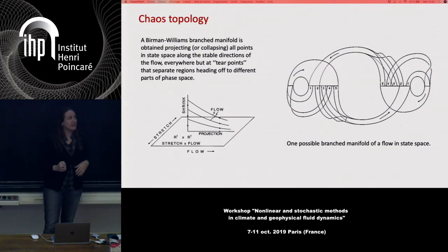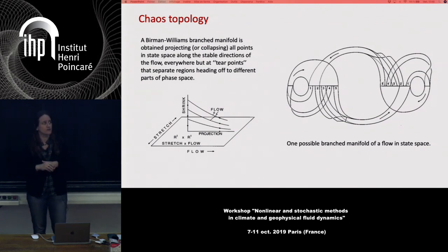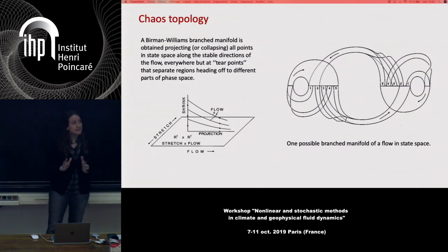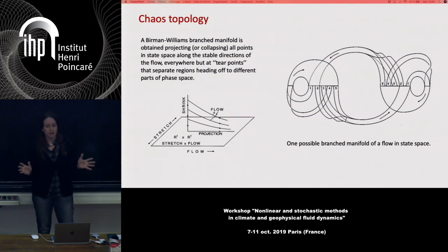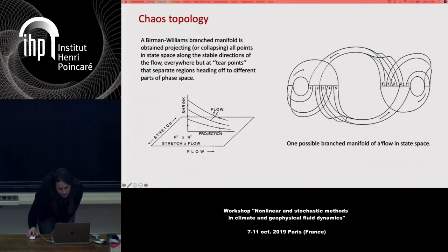What is a Birman-Williams branched manifold? It is a mathematical object obtained by projecting or collapsing all points in state space along the stable directions of the flow, everywhere but at tear points that separate regions heading off to different parts of phase space. Here you see the directions in state space — stretching directions — and along the stable directions the flow is projected, yielding one possible branched manifold of a flowing state space, which can be quite complex.